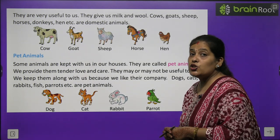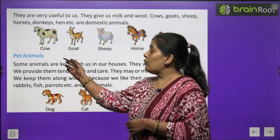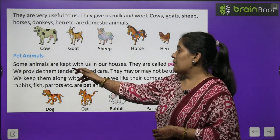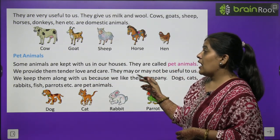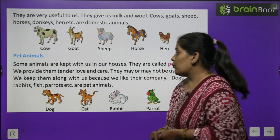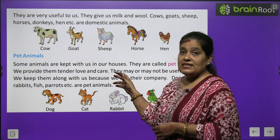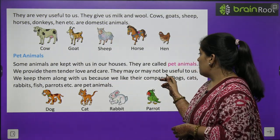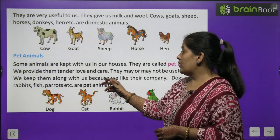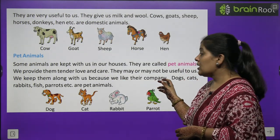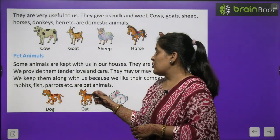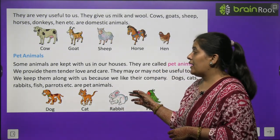Now we will learn about pet animals. Some animals are kept with us in our houses. They are called pet animals. We provide them tender love and care. They may or may not be useful to us. We keep them along with us because we like their company. Dog, cats, rabbit, fish, parrot etc. are pet animals.